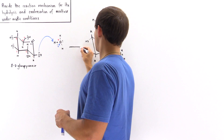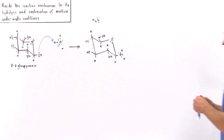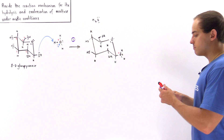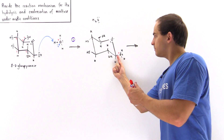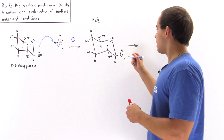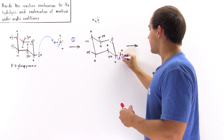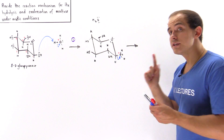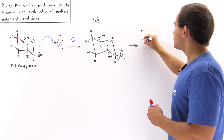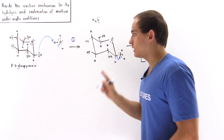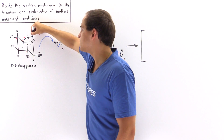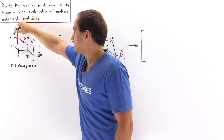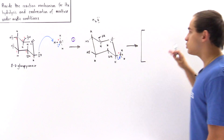This is step number one: the protonation of the hydroxyl group on our anomeric carbon number one. In the next step — step two — because this is a good leaving group and this bond is weakened by the positive charge, the electronegative oxygen pulls away the bonding electrons. This is the key point: we form a resonance-stabilized intermediate. Only the protonation of this hydroxyl leads to this resonance-stabilized intermediate because of the proximity of this oxygen to carbon one. Protonating any other hydroxyl group will not lead to this resonance-stabilized intermediate.